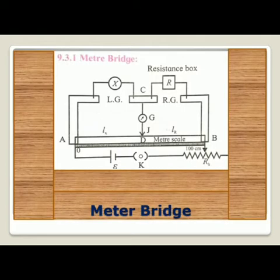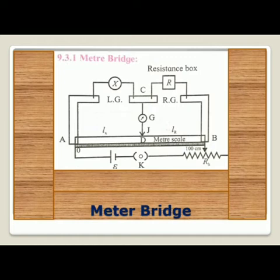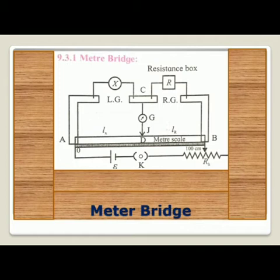After the Wheatstone bridge, let us move to the meter bridge. A meter bridge consists of a 1-meter-length wire stretched on a meter scale fixed on a wooden table. The ends of the wire are fixed below two L-shaped metallic plates. A single metallic strip separates the two L-shaped strips leaving a left gap and a right gap. Usually, a known resistance is placed in the right gap and an unknown resistance in the left gap.